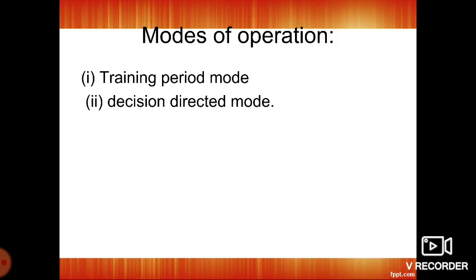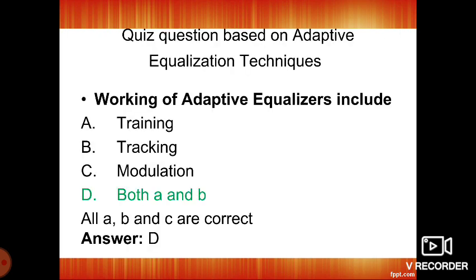The modes of operations are training period mode and decision-directed mode. Adaptive equalizers are used in telephone channels, which are made up of individual links. The distortion for a telephone network depends upon the transmission characteristics of individual links and the number of links in the connection. Fixed pairs of transmit and receive filters cannot solve the equalization problem completely, because transmission characteristics of the channel keep on changing — therefore, adaptive equalization is necessary.